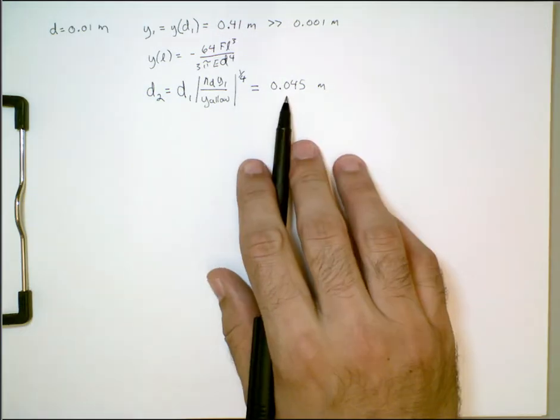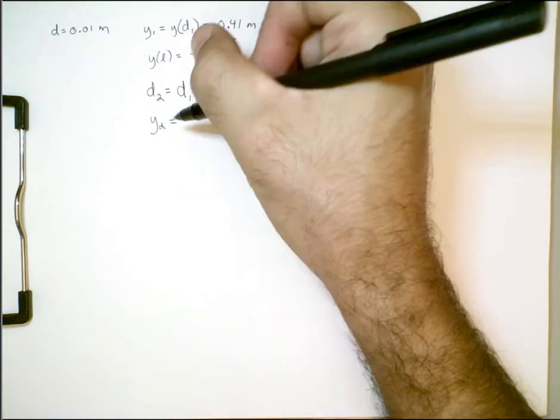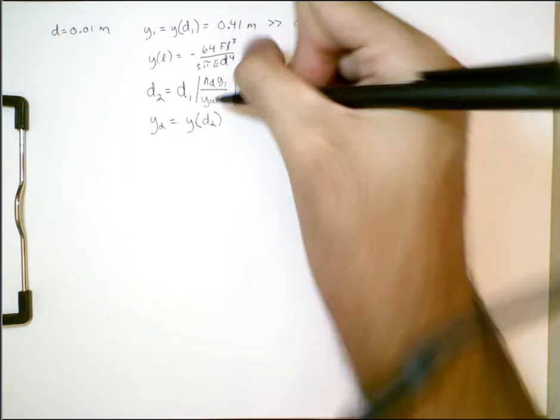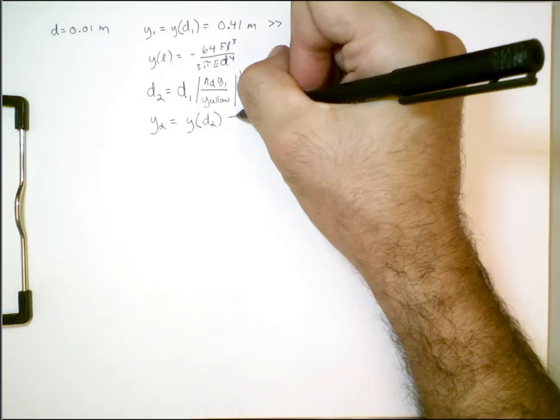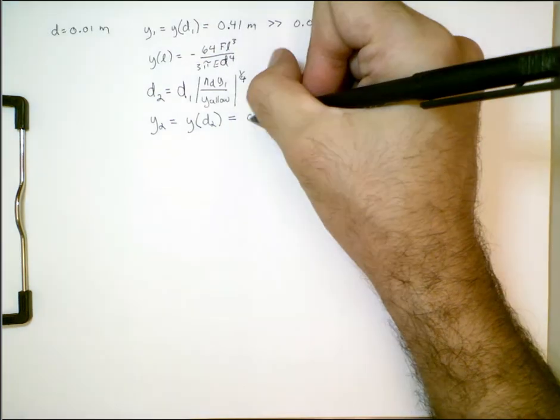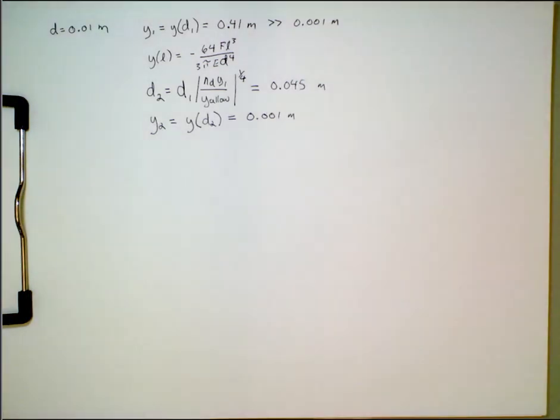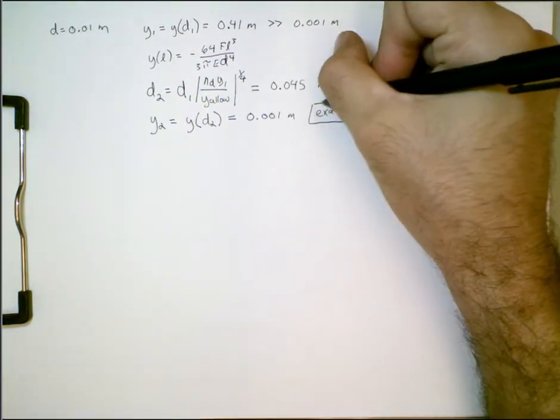So let's see how we did. And let's find out what the maximum deflection is for this design, d_2 equals 4.5 centimeters. And we will call that y_2. That's going to be y of d_2, plugging everything into this formula based on a linear model. And, as expected, it produces a 1 millimeter deflection. It gives us exactly the allowable deflection.